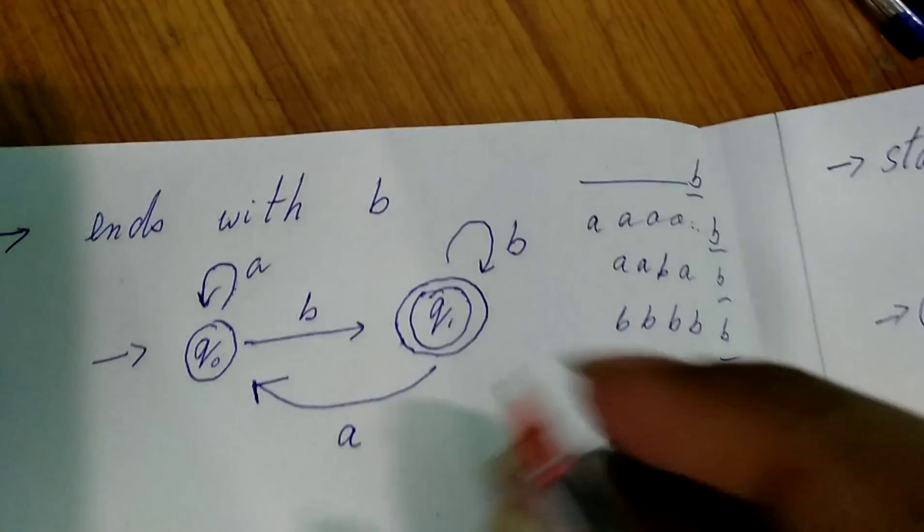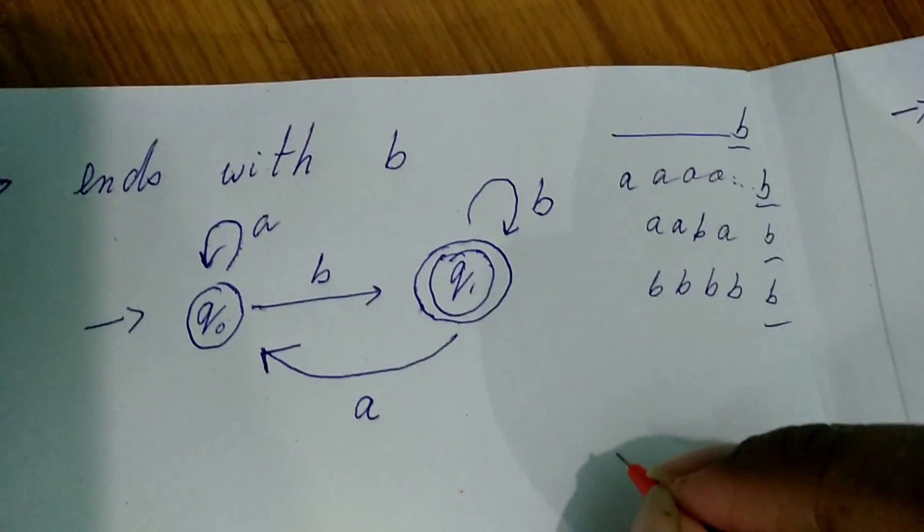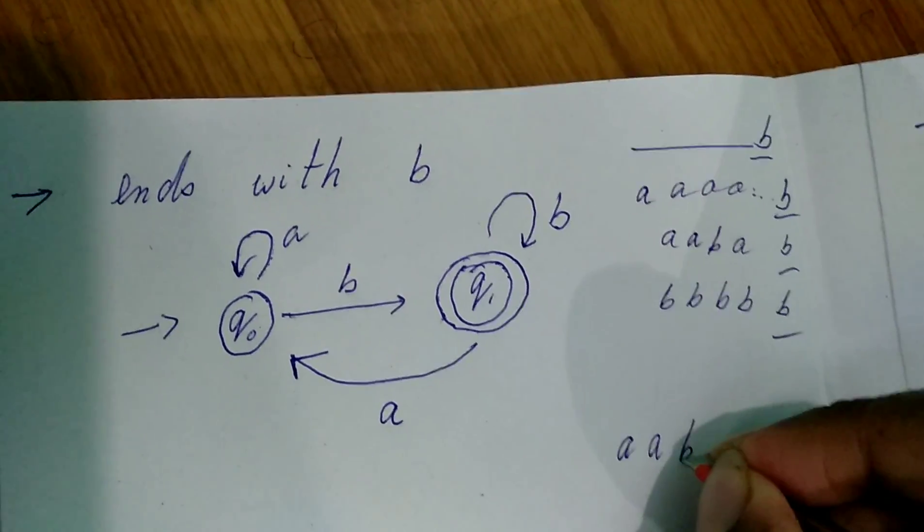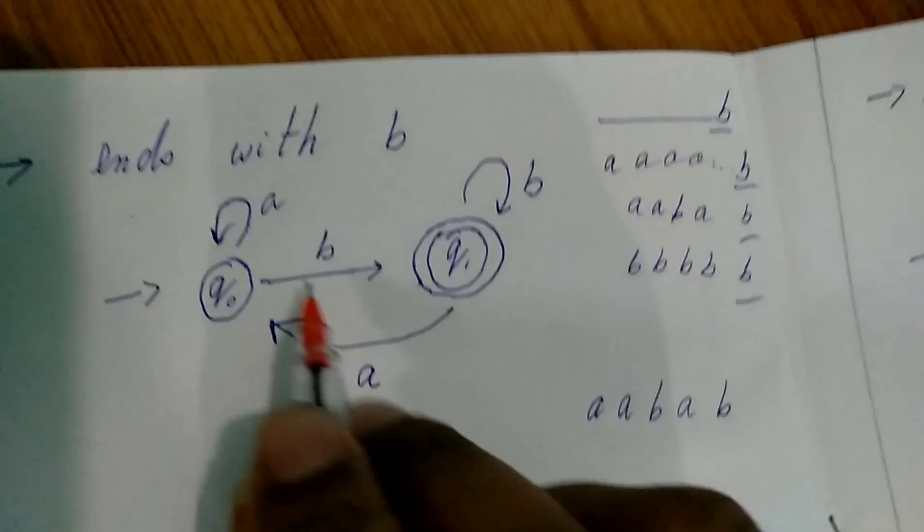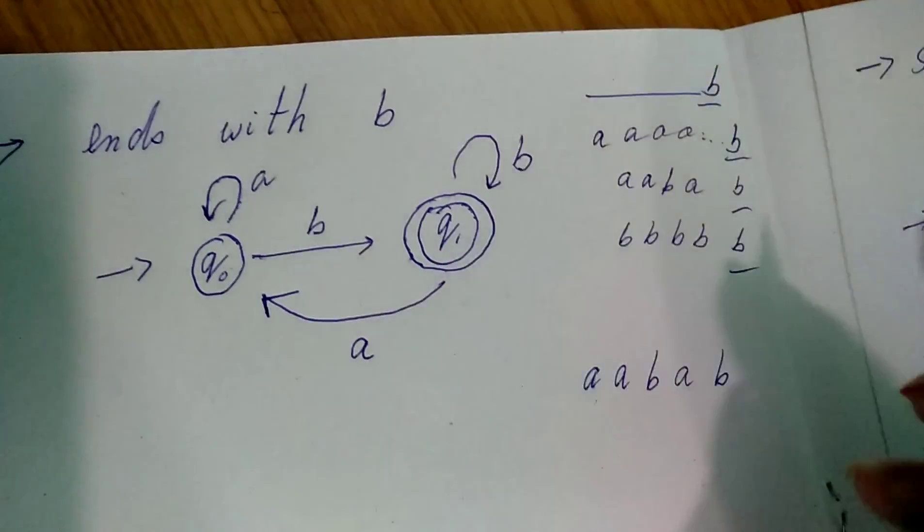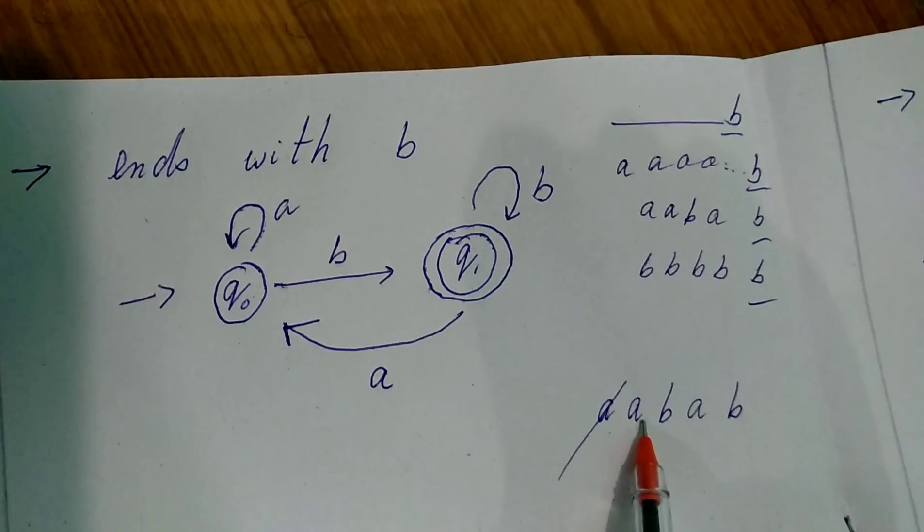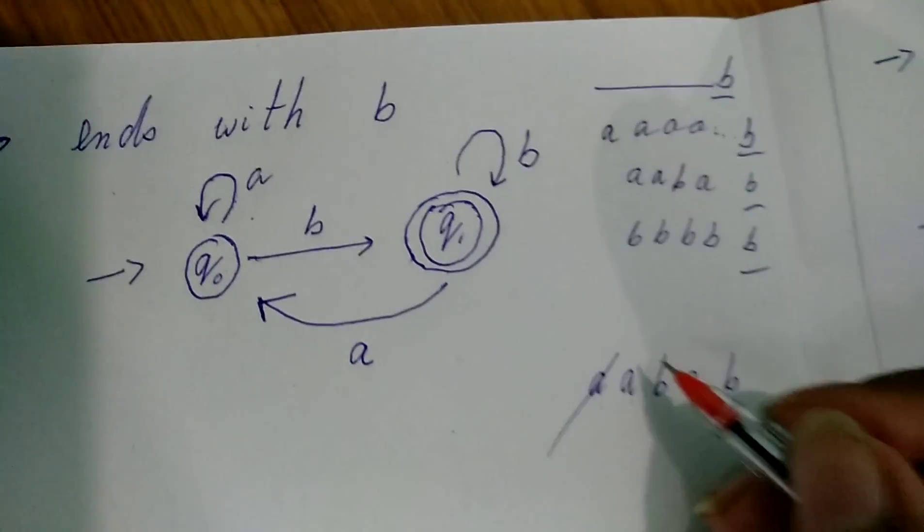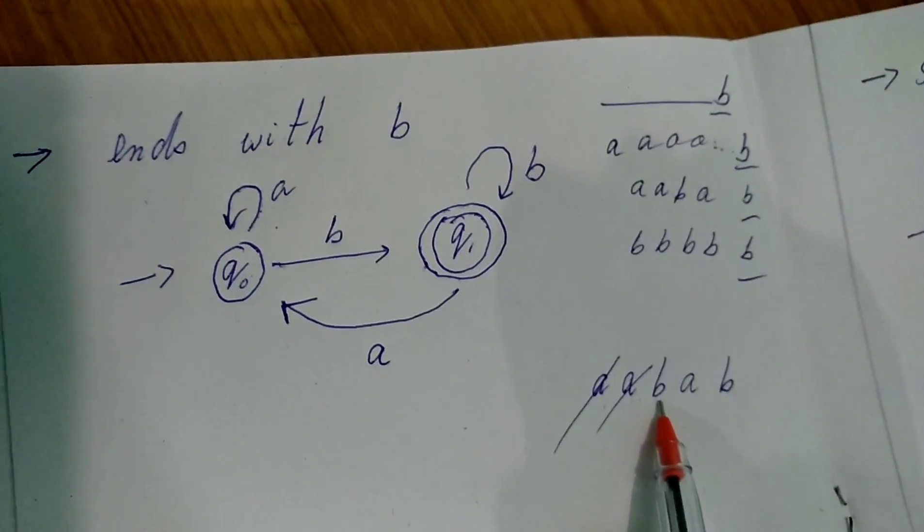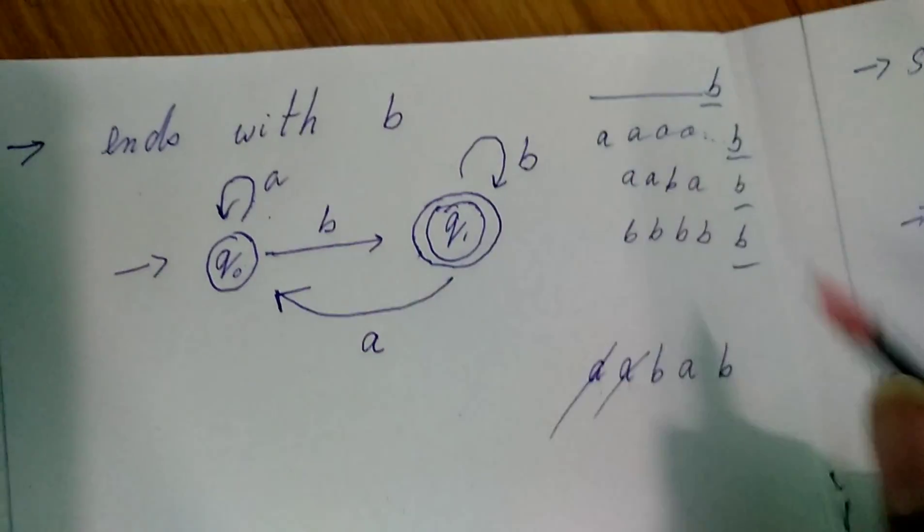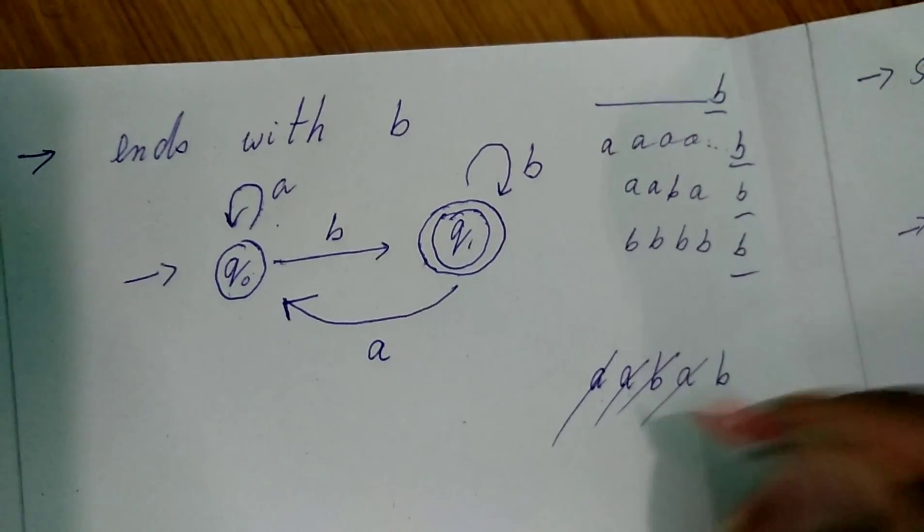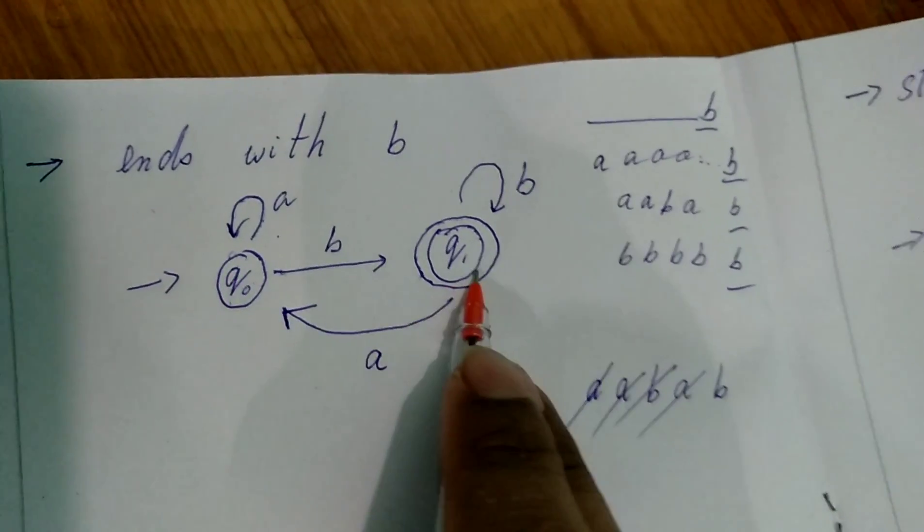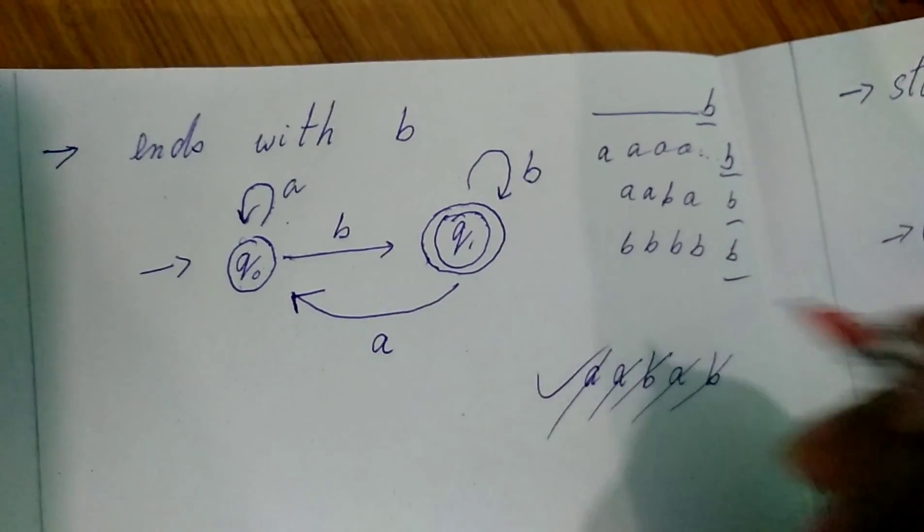I'll show you an example. Let's take an example of A, A, B, A, B. At Q0 A, we will remain in the same state. Again A, remain in the same state. When we get B, we will move to Q1. Q1 A will come back to Q0. Then Q0 B, Q1. The string has been accepted.